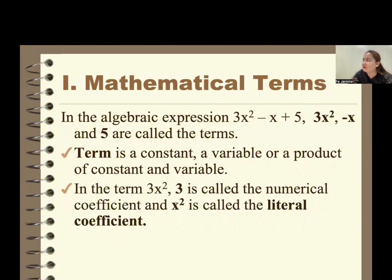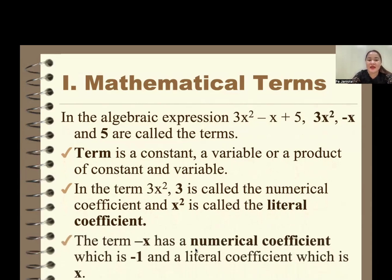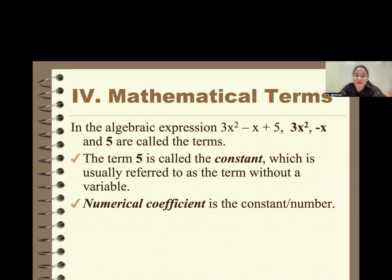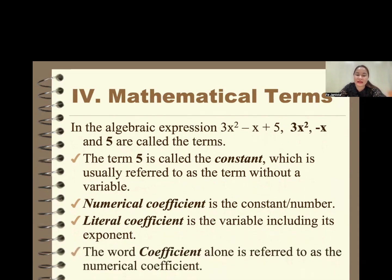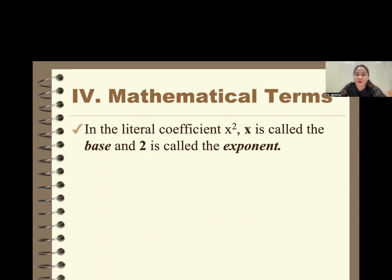In the term 3x squared, 3 is called the numerical coefficient and x squared is the literal coefficient. In negative x, the numerical coefficient is negative 1 and the literal coefficient is x. The number 5 is a term which is a constant. The numerical coefficient is a constant or a number, and the literal coefficient is a variable including its exponent. The word 'coefficient' alone refers to the numerical coefficient.